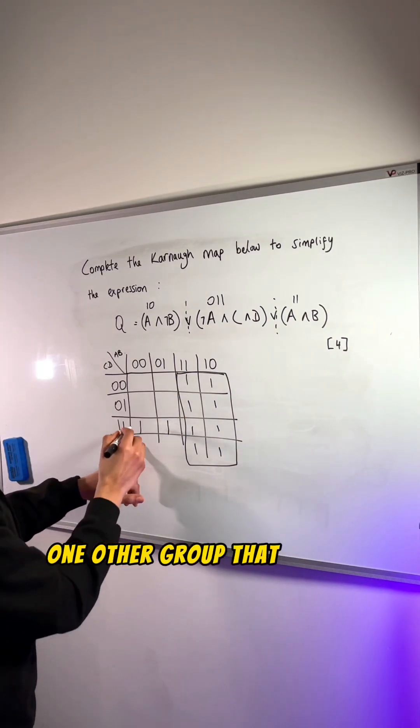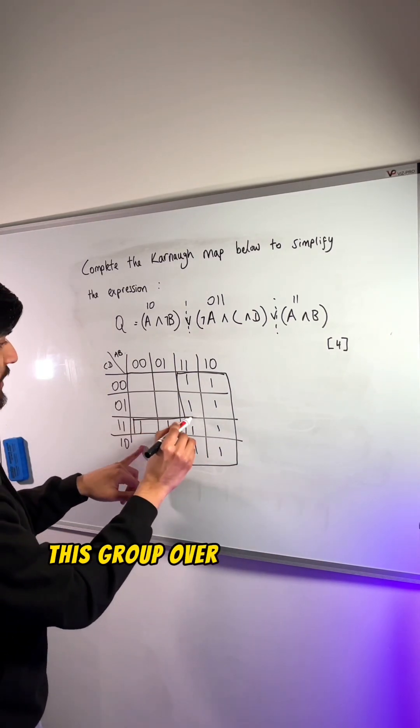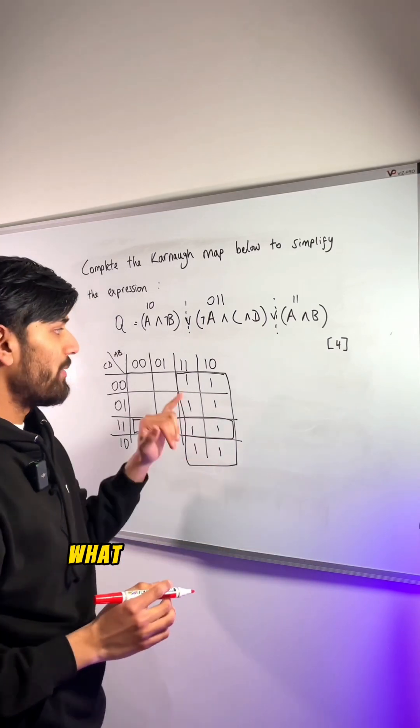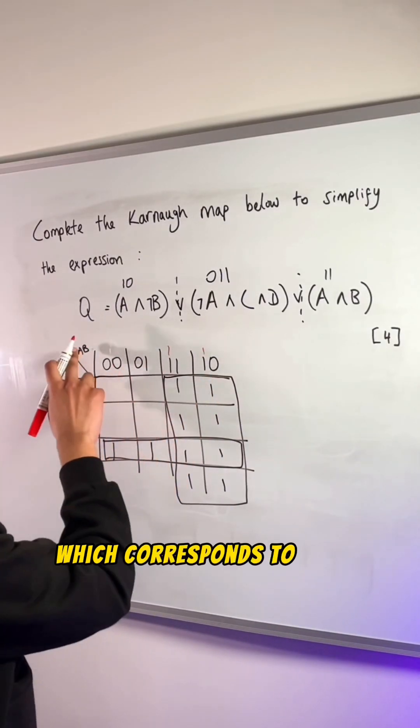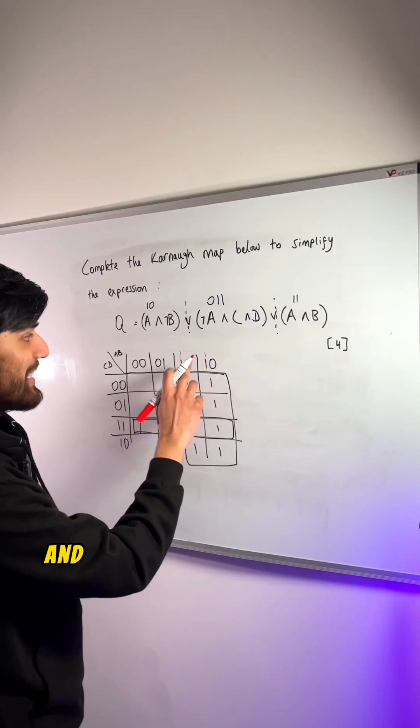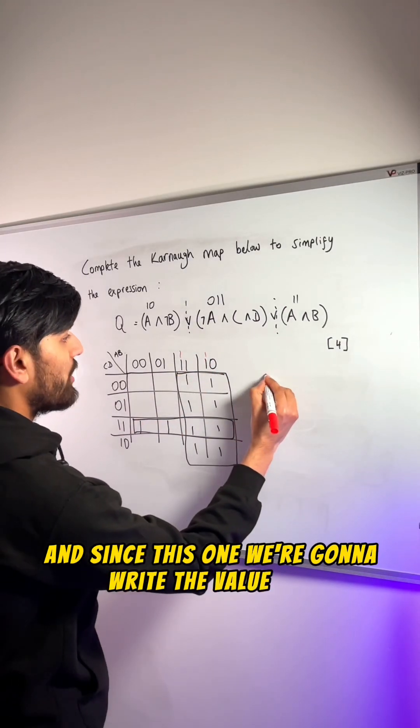And one other group that you can create is this group over here. And now from the first group, what we need to see is the values over here, which corresponds to A and they don't change. And since it's 1, we're going to write the value of A.